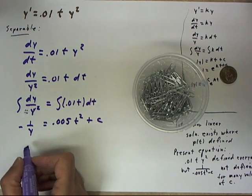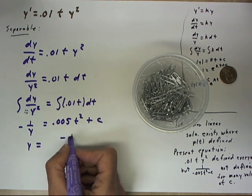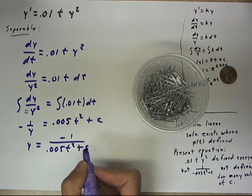Now we still need to solve for y, but that's easy. y would then equal negative one over .005t squared plus c.